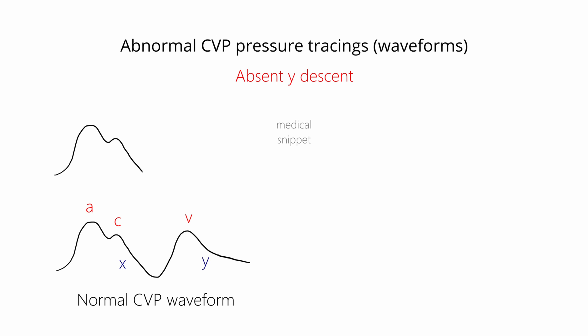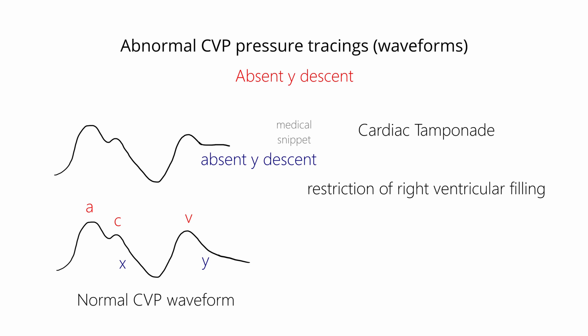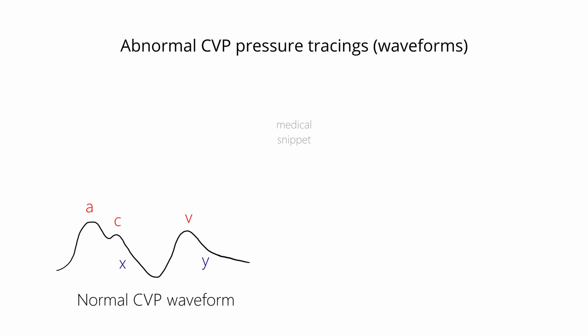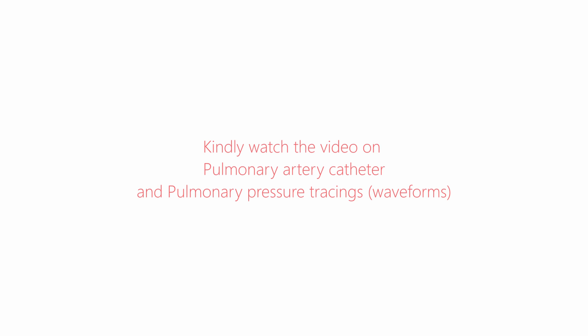Absent Y descent occurs in cardiac tamponade, due to restriction of right ventricular filling caused by the tamponade. This completes the abnormal CVP pressure tracings. I would also recommend watching the pulmonary artery pressure tracing video — the link is given in the description. Hope this video was useful. Thank you, and see you soon in the next video.